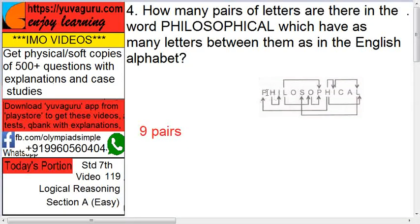even if you go backward, you have the same number. Similarly, L and S. So don't count only forward, go backwards also. So there are total nine pairs.